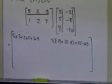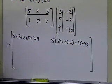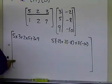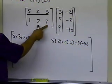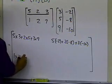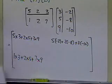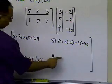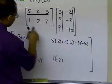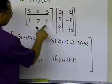Whatever row and column element you are calculating, you take the row of the first matrix and the column of the second matrix for the dot product. For the second row, first column: 1 times 3, plus 2 times 5, plus 7 times 9. For the second row, second column: 1 times -2, plus 2 times -8, plus 7 times -10.